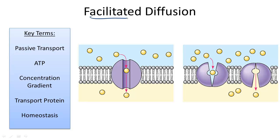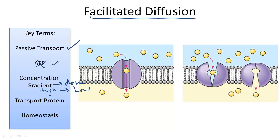Facilitated diffusion is yet another type of passive transport, besides osmosis and diffusion, in which substances move down their concentration gradient from an area of high concentration to low concentration of a solute. It does not require ATP to occur, and facilitated diffusion differs from diffusion in the sense that it uses a transport protein, located in this picture in purple.